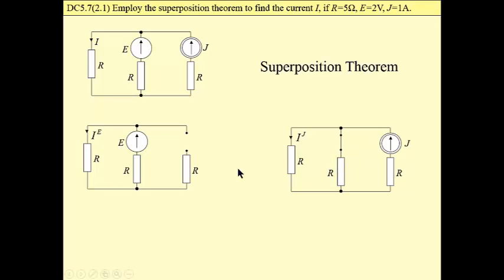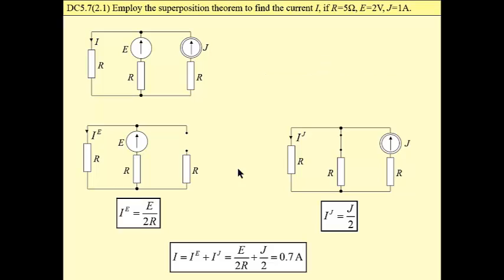Solution of these circuits with one source acting only is trivial. Below you have this solution. And then if we add them up, these two components, we obtain the current that we are looking for, which is 0.7A. This was the application of a superposition theorem.